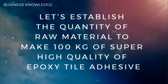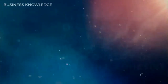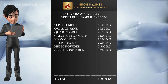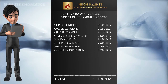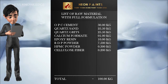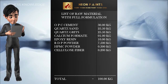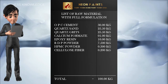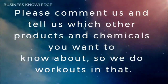To make 100 kg of super high quality epoxy tile adhesive, you need: OPC cement 30.00 kg, quartz sand 25.50 kg, quartz grits 25.50 kg, calcium formate 1.00 kg, epoxy resin 10.00 kg, RDP powder 7.500 kg, HPMC powder 0.300 kg, and cellulose fiber 0.200 kg.